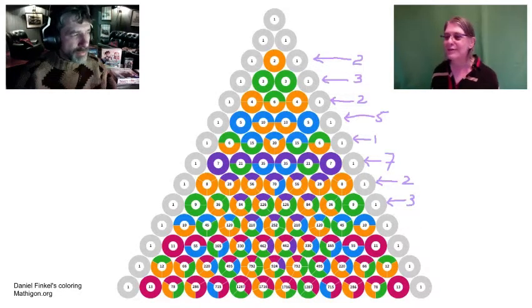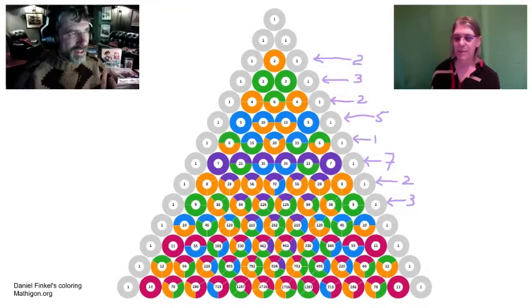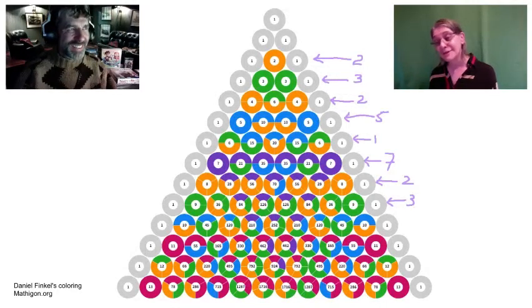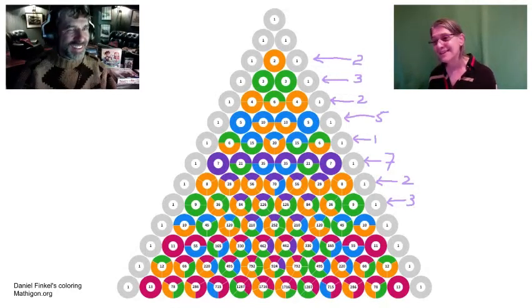So maybe if you study enough you can see some pattern. I don't want to give it away. Because I looked at enough rows, I figured out what it was. Then it was like: how do I prove my conjecture?